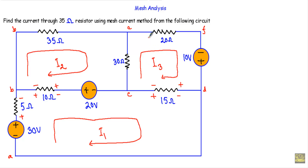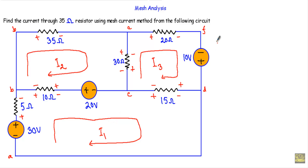In case of this 20 ohm resistor, I3 will be entering from this direction and leaving from this direction, so this terminal will be positive and this terminal will be negative. I2 will be entering from this direction so this side will be positive and this side will be negative. In case of this 35 ohm resistor, I3 will be entering from this direction and leaving from this direction, so this will be positive and this will be negative. I am done with indicating the polarities of the resistors.